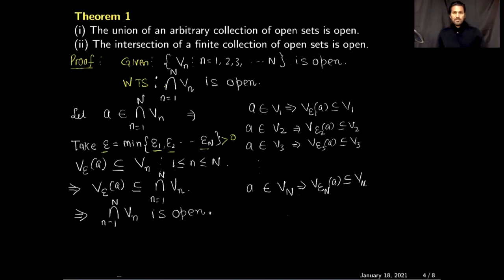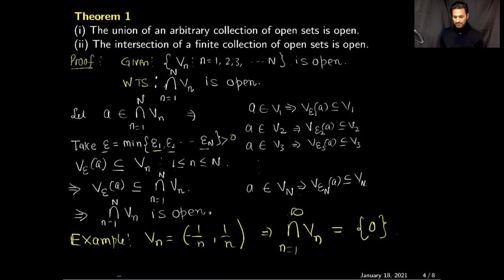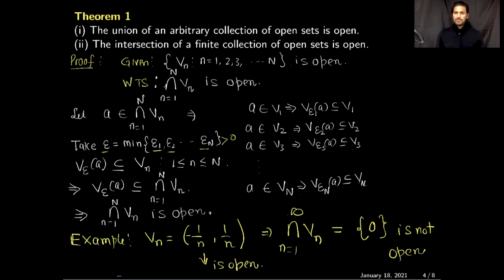Let me give a counterexample for infinite intersection. Consider the set V_n equal to the open interval (-1/n, 1/n). The infinite intersection from 1 to infinity of these V_n contains only the element zero, which is not an open set — you cannot find an open bubble around this singleton set contained within it. Each V_n is open, but the infinite intersection is the singleton set {0}, which is not open. This is the end of our video. Thank you very much for watching. I will see you in the next video.